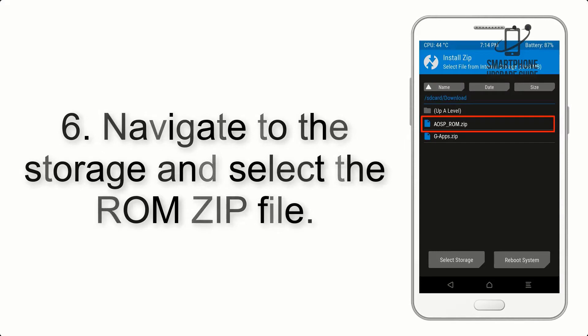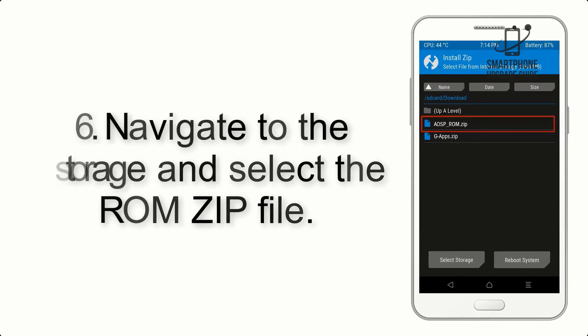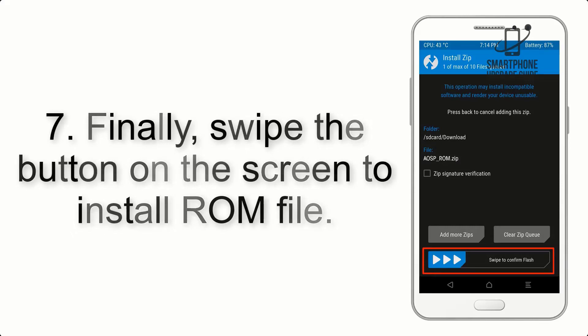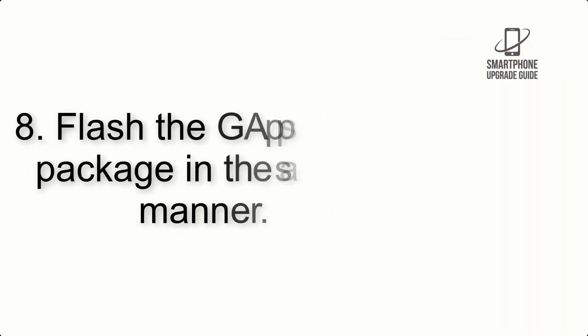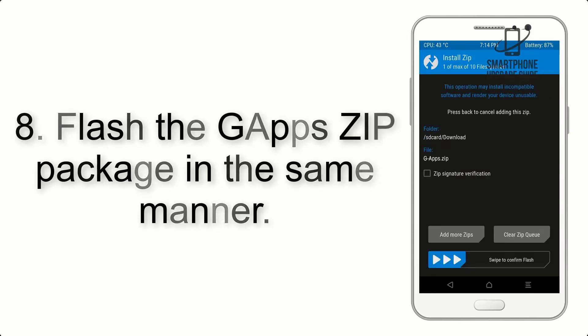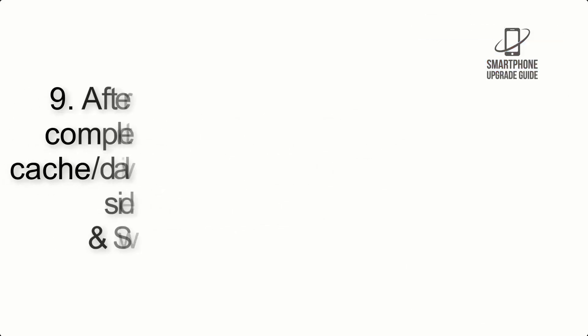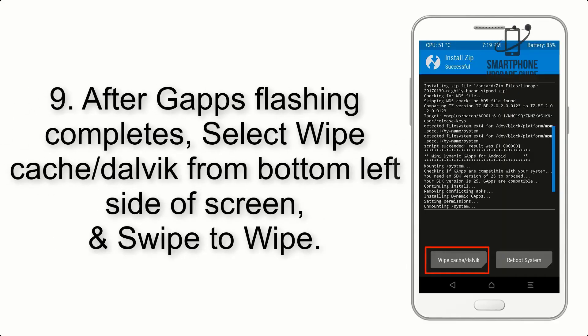Step 5: Go back to the recovery main screen and tap on the Install button. Step 6: Navigate to the storage and select the ROM zip file. Step 7: Finally, swipe the button on the screen to install the ROM file.